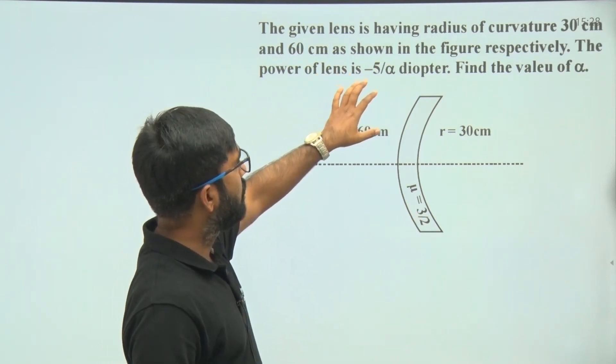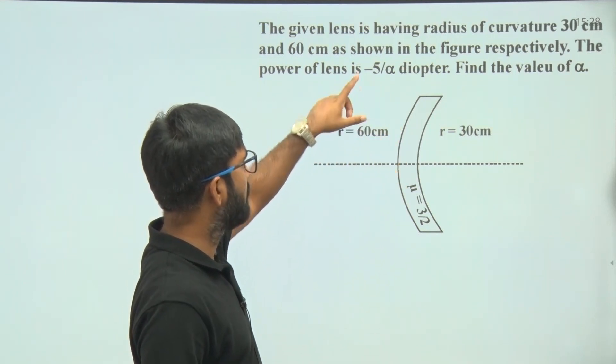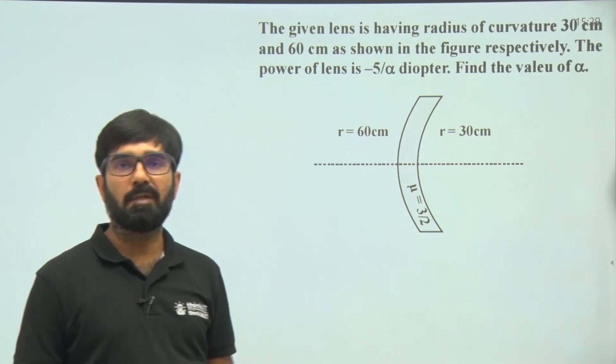We have to find out the power of the lens. According to the question, power of the lens is given by minus 5 by alpha, then we have to find out the value of alpha.